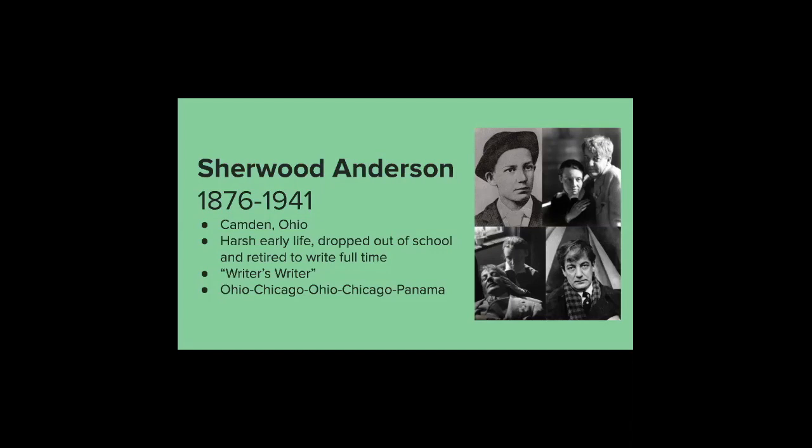Throughout his life, Anderson had four different wives. The first was Cornelia Pratt Lane, the only wife he had children with — his only three children. Then there was Tennessee Mitchell, Elizabeth Prall, and Eleanor Copenhaver. He ended up with Copenhaver for the rest of his life from 1933, but sadly that wasn't very long since he died in 1941.